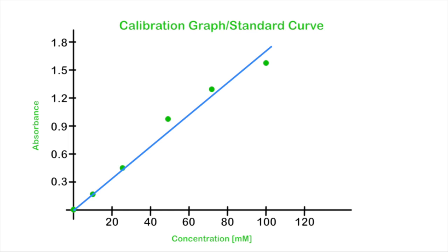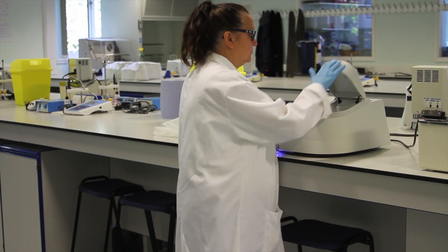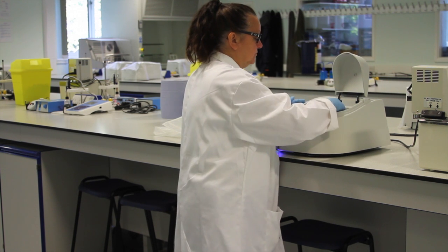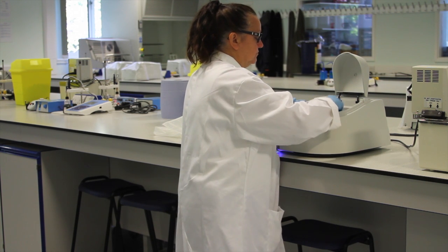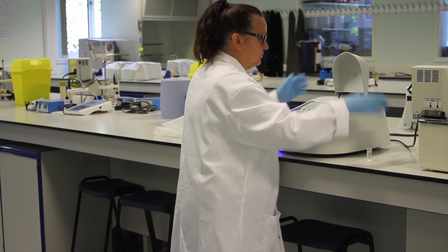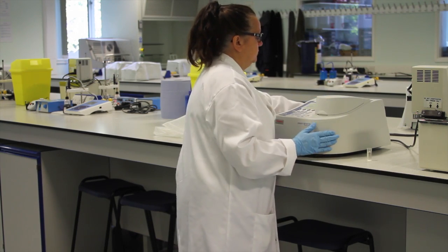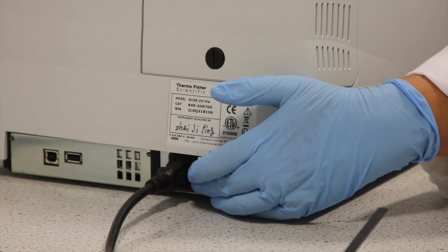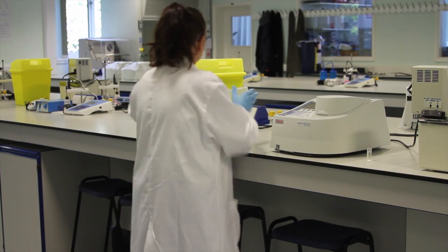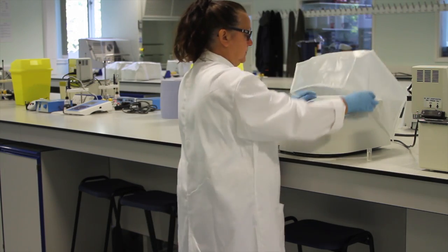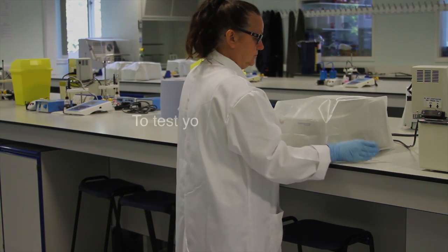For more information on calibration graphs, see the lab schedule and other videos in this series. Once you have finished, you should remove all cuvettes from the spectrophotometer and rinse them out with deionised water. Make sure you turn the machine off and replace the dust cover when you are finished. To test your understanding, please complete the short quiz on the KLE. Thank you.